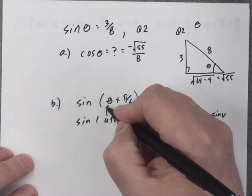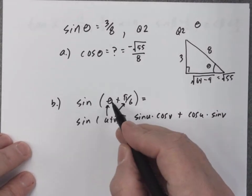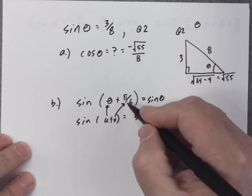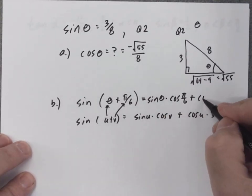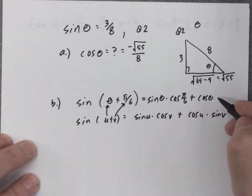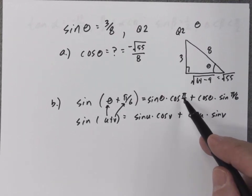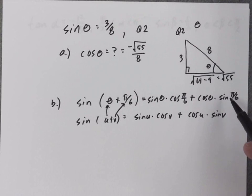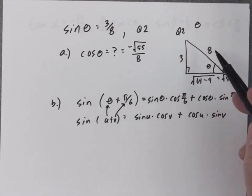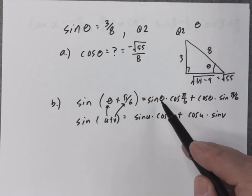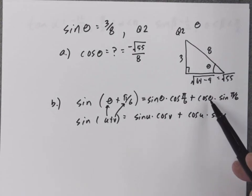For us, we'll call U theta and we'll call V pi over 6. So by using this formula, the sine of theta plus pi over 6 is going to be sine of theta times cosine of pi over 6, plus cosine of theta times sine of pi over 6. I know the cosine of pi over 6 and the sine of pi over 6 — those are special angles. For sine of theta and cosine of theta, that's why I created this right triangle representing angle theta.